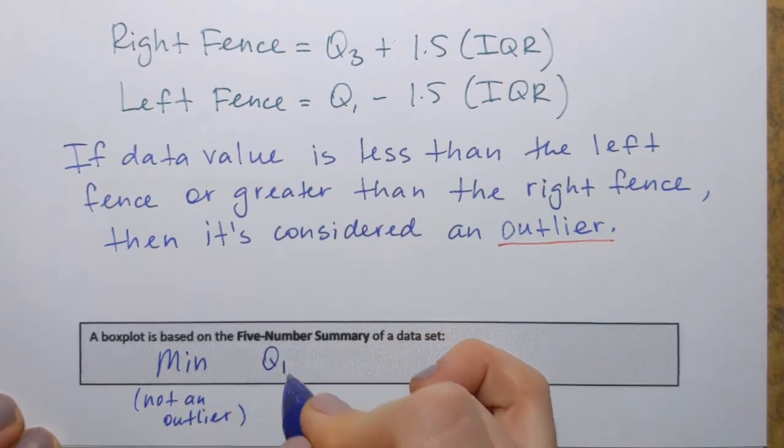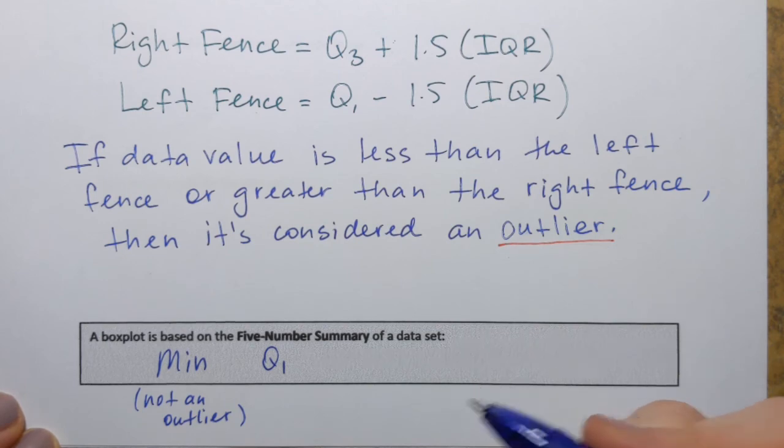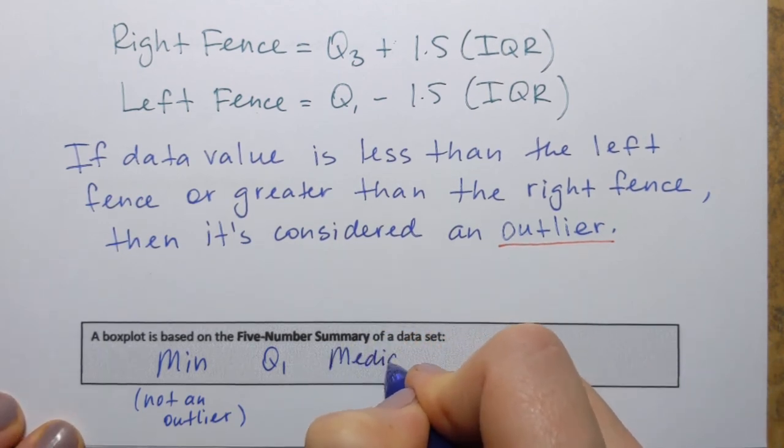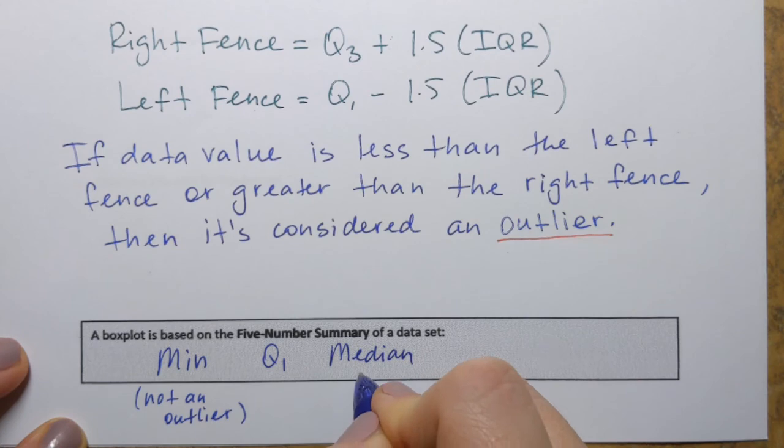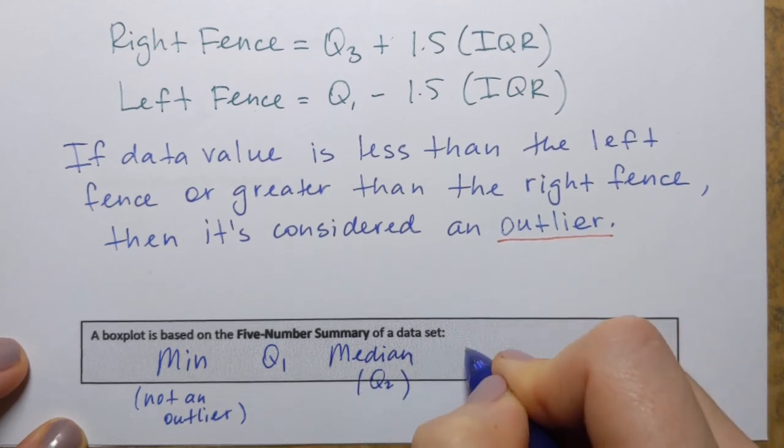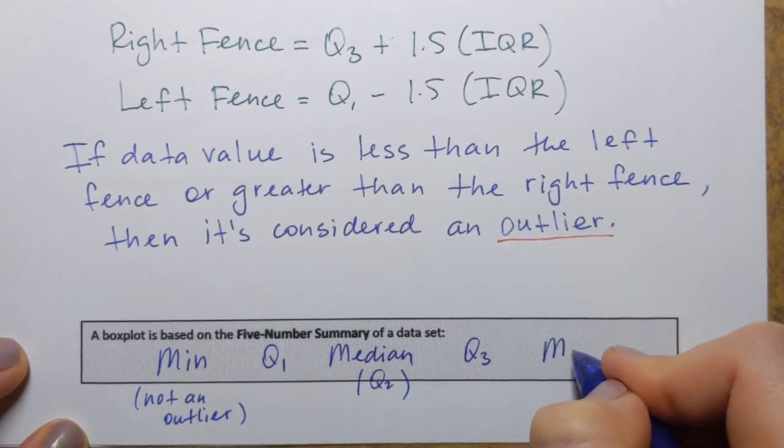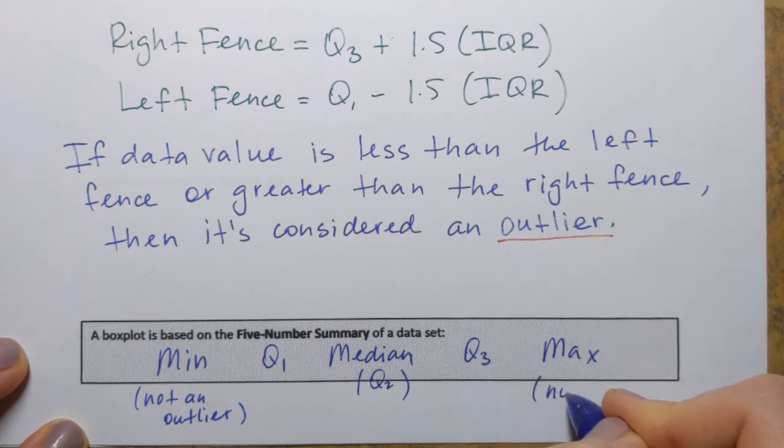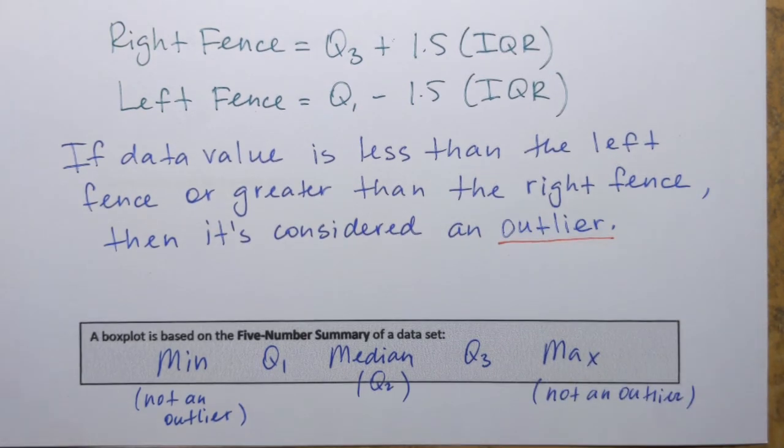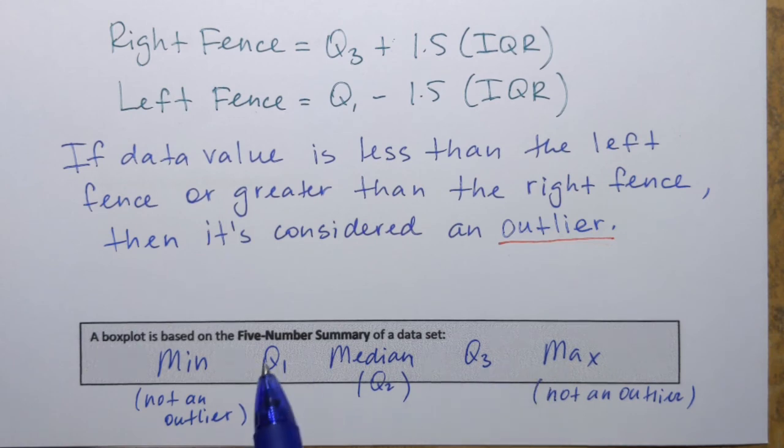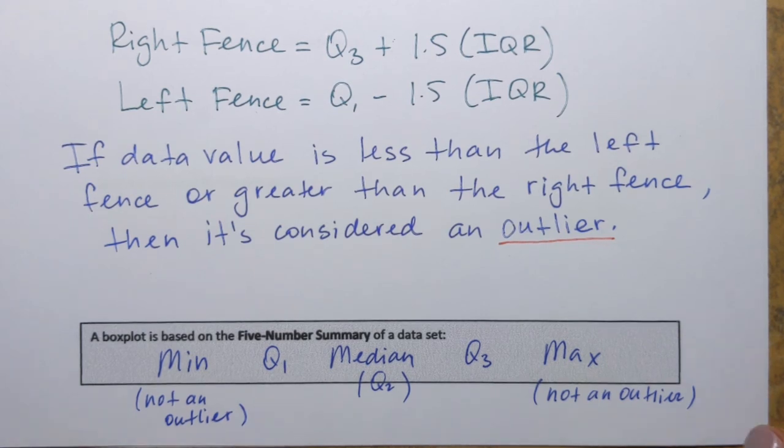then it's Q2 or median, I'll write median, but it's same as Q2, then Q3, and then maximum value, again, not an outlier. So if you come across a five number summary of a data set, in other words, you will be just given five numbers in order. Well, each number has its own meaning. And here they are, five number summary. In the next video, we're going to do an example where we actually construct a box plot from scratch.